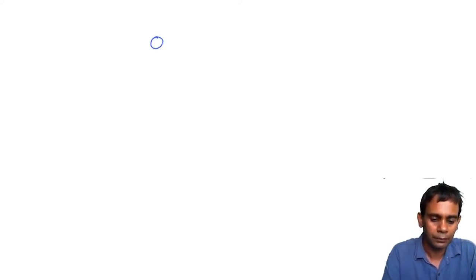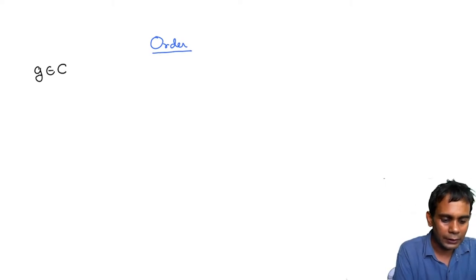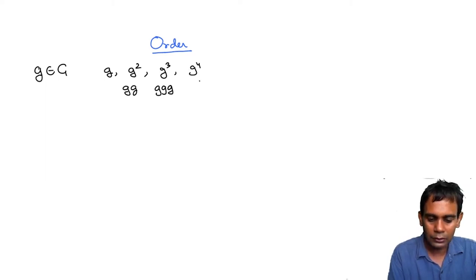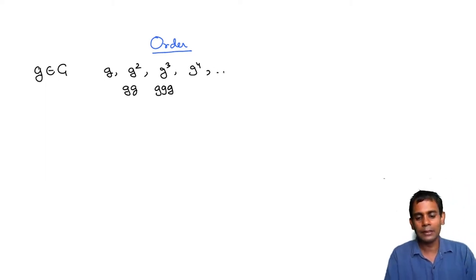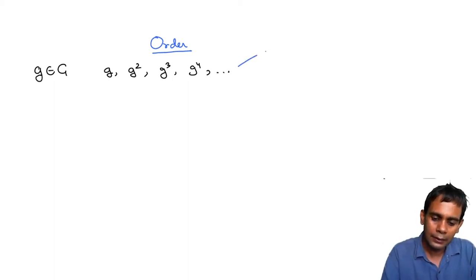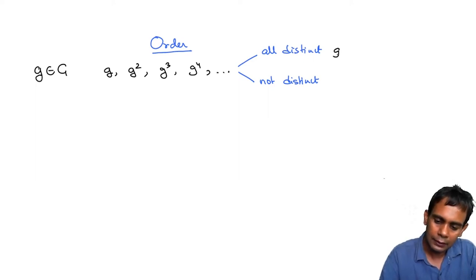One feature of elements in a group is their order. Suppose you have a group G and an element g in G. You can consider the sequence g, g squared — meaning g times g — g cubed, g to the power 4, and so on. That's an infinite sequence of elements in the group G. There are two cases: either these are all distinct, or not all distinct. In the first case, we say that g has infinite order.